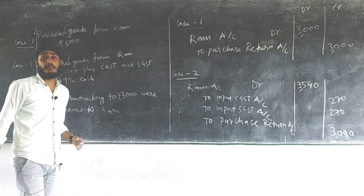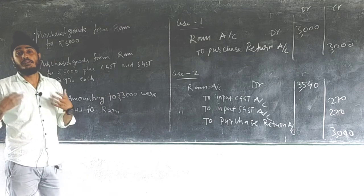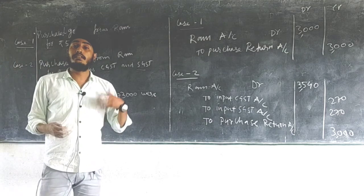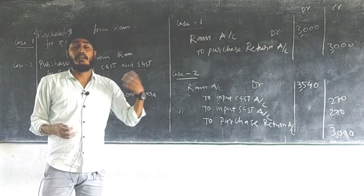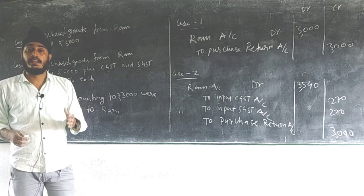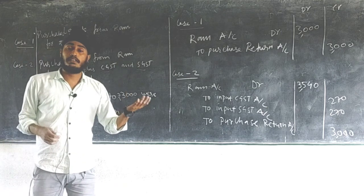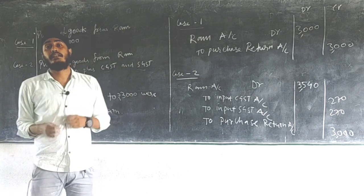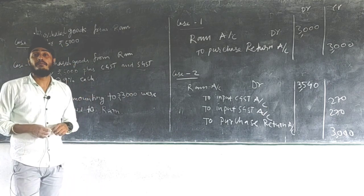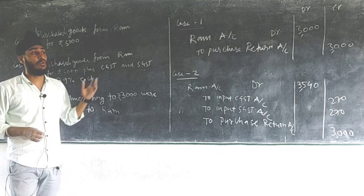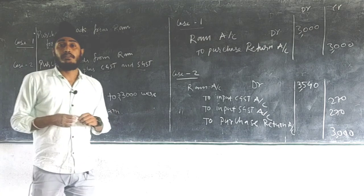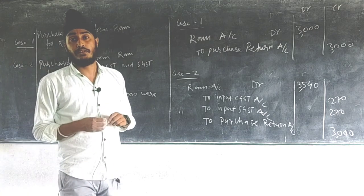Today we have learned how journal entries are passed when GST is involved in transactions — mainly in purchase, sale, purchase return, and sales return. We also learned the categories of GST. Note it down in your copy. That's all for today. Thank you, students.